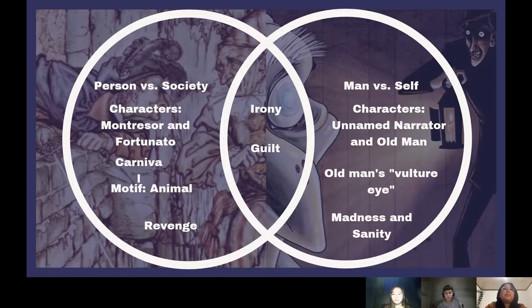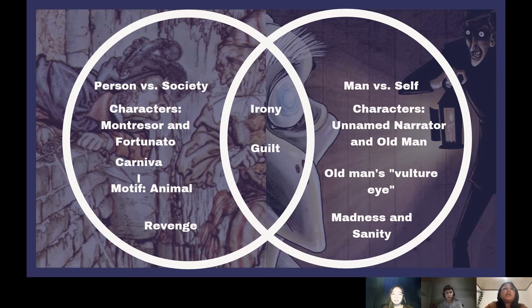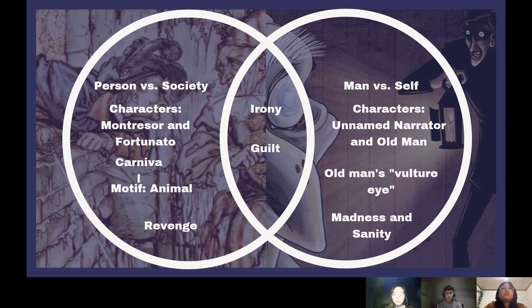Moving on to the Venn diagram presentation. For The Cask of Amontillado, we have person versus society conflict. Montresor uses his subjective experience as narrator — that Fortunato constantly insulted him — to make himself judge, jury, and executioner, which also makes him a very unreliable narrator. For the characters, first we have Montresor, the narrator, whose face was covered in a black silk mask, representing not blind justice but rather its gothic opposite — biased revenge. Fortunato was dressed in a motley-colored costume like the court fool, who gets literally and tragically fooled by Montresor's masked motives.